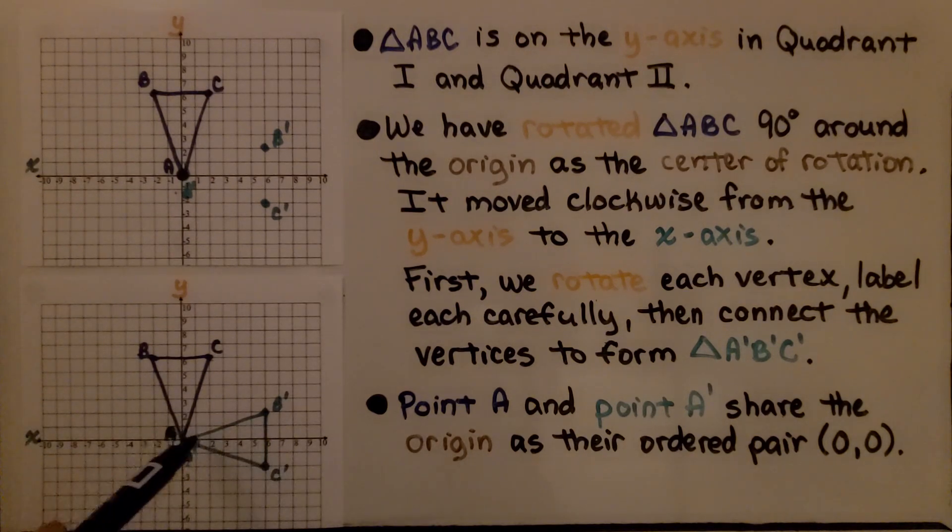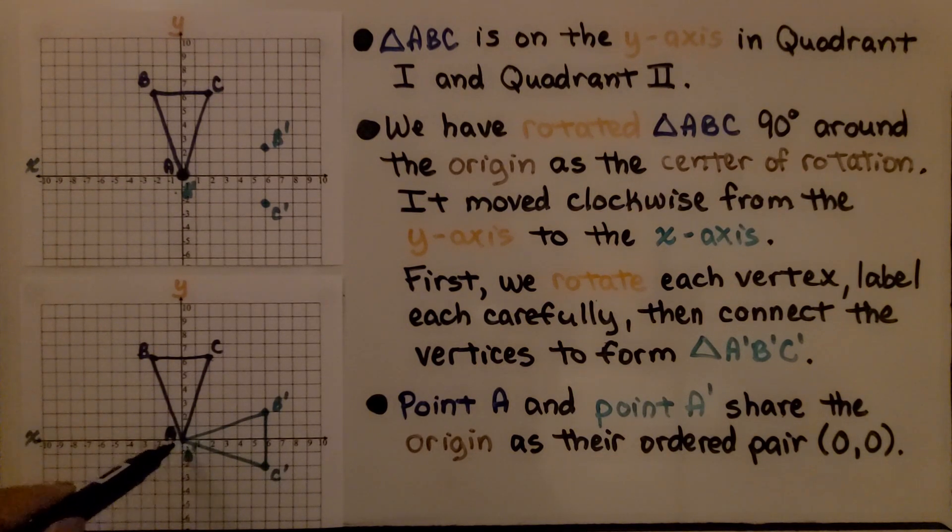Then connect the vertices to form triangle A prime, B prime, C prime. Point A and point A prime share the origin as their ordered pair (0, 0).